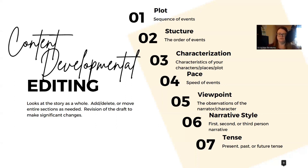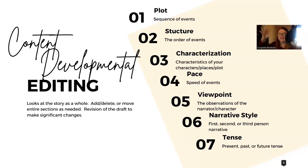Then there is viewpoint — the observations of the narrator or character in the scene. I am guilty, as are many others, of head jumping: having the thoughts of one person and then switching to the thoughts of another person in the same scene. It can be very disruptive. I'm trying to work harder on staying in the lane of the person you're supposed to be during that particular scene or chapter.